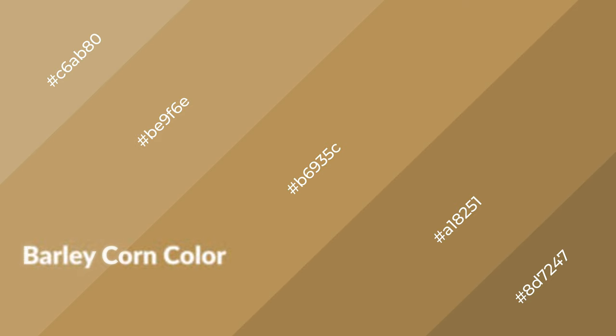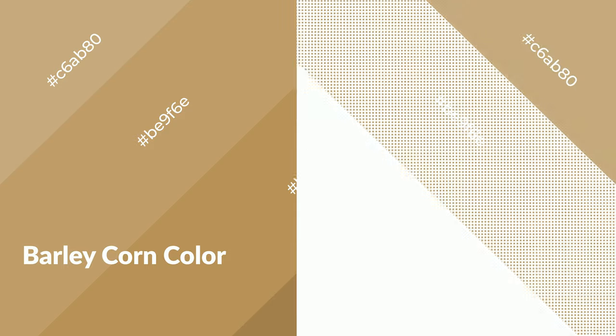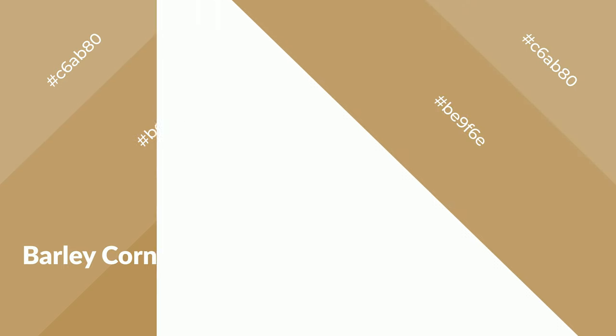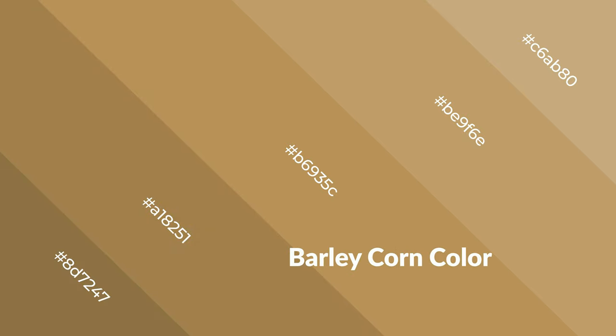Barley corn is a warm color and it emits cozier and active emotions. Warm colors are symbols of warmth, fire, heat, and sunshine. It also evokes joy, passion, love, and even anger. You can see warm colors used in restaurants and gyms.